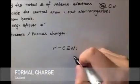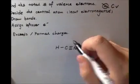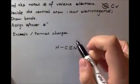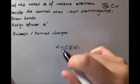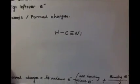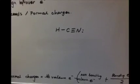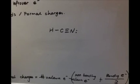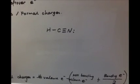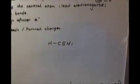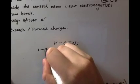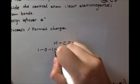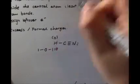After we finish this, we need to calculate the formal charge, because a Lewis structure is not complete without doing formal charges — we do it for each element. The formula for formal charge is: the number of valence electrons minus the non-bonding valence electrons minus the number of bonds. For hydrogen: one minus zero minus one equals zero.